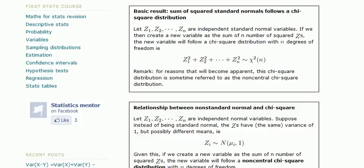Hi everyone, Phil from StatisticsMentor.com here. In this video we'll be looking at the relationship between the standard normal distribution and the chi-square distribution. The central result is this.